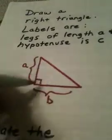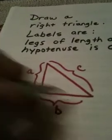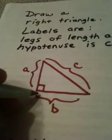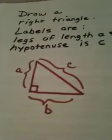and the longest side of the right triangle is always across from the right angle, and that is called the hypotenuse, and we normally label that as C. So remember, A is a number representing the length of a leg, B is a number representing the length of the leg, and C is a number representing the length of the hypotenuse.